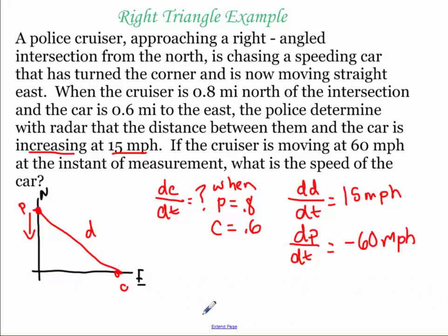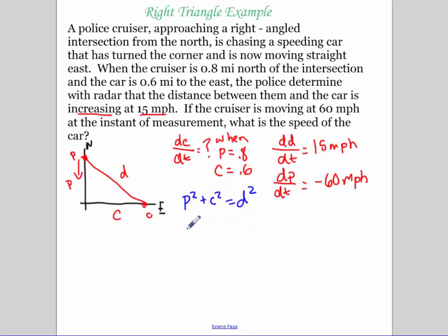Okay, so let's write an equation for what we have here. We have an equation here. If I make that side of our triangle P and this side C, we have our equation to be P squared plus C squared equals the distance squared between them. So then I'm going to take the derivative with respect to time.